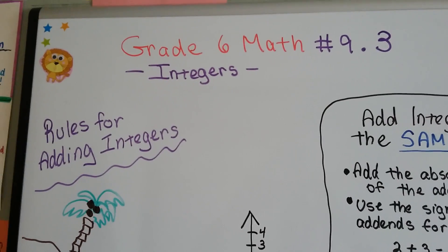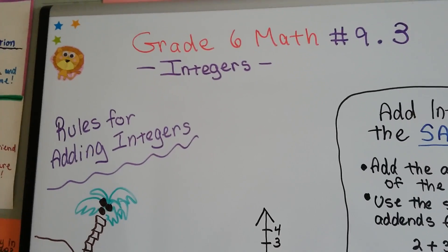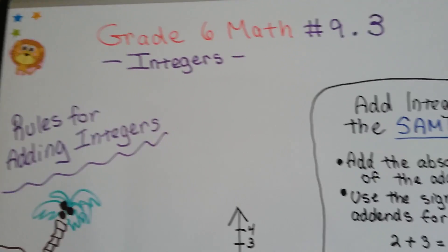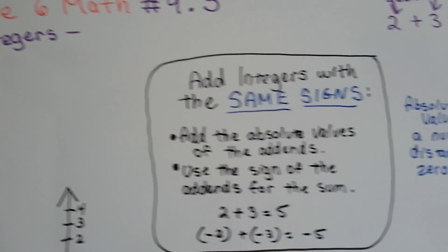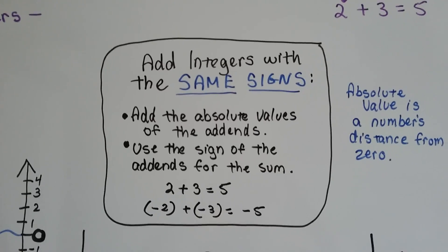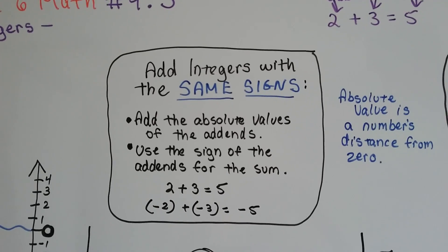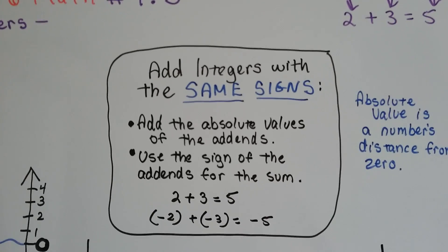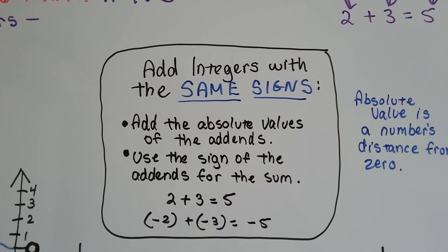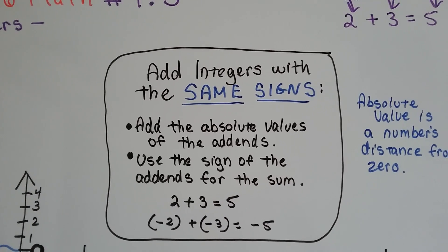Grade 6 math, number 9.3: Rules for adding integers. When we add integers with the same signs, we add the absolute values of the addends, and then we use the sign of the addends for the sum.